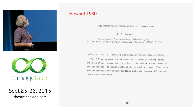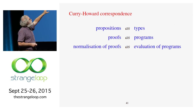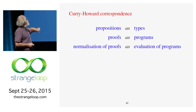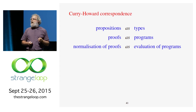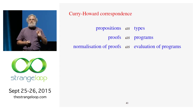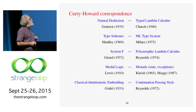Howard then asked: if implication and conjunction correspond to these things, what do "for all" and "there exists" correspond to? That led to a new kind of type called dependent types, which are the basis today of many proof systems. So it's often called the Curry-Howard isomorphism, or the BHK interpretation, or sometimes propositions as types. Anything that's really important will, of course, have lots of names. What I showed you only works for something called intuitionistic logic.